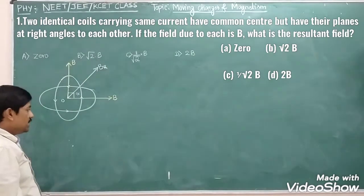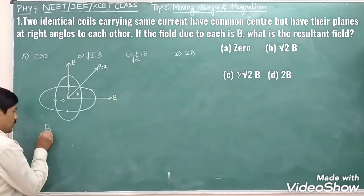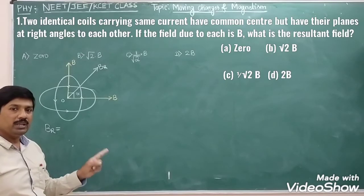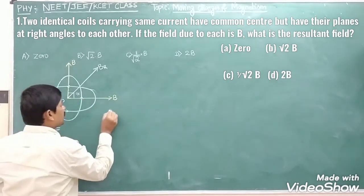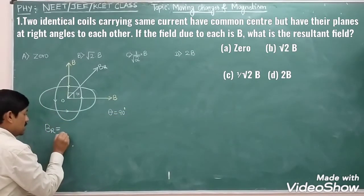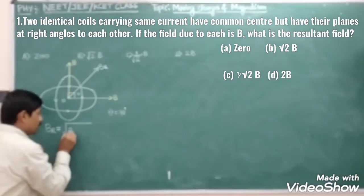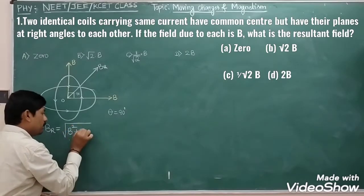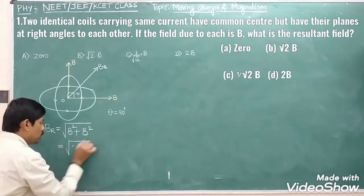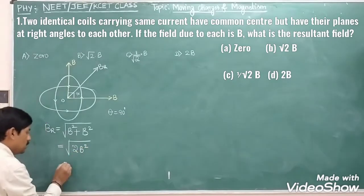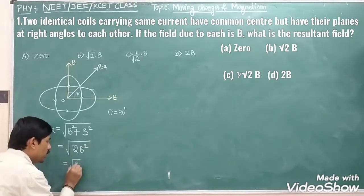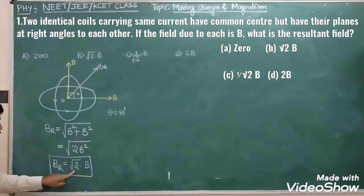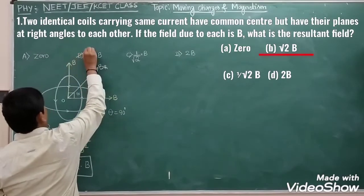We know the formula: the resultant magnetic field is given by square root of B1² + B2² + 2·B1·B2·cos θ. Since θ is 90 degrees, cos 90° = 0, so the resultant is square root of B1² + B2². Both fields are equal, giving square root of B² + B² = square root of 2·B² = root 2 into B. So the resultant magnetic field is root 2 into B. Option B is correct.